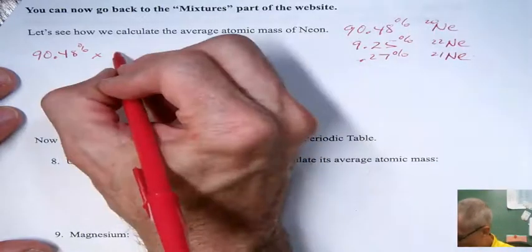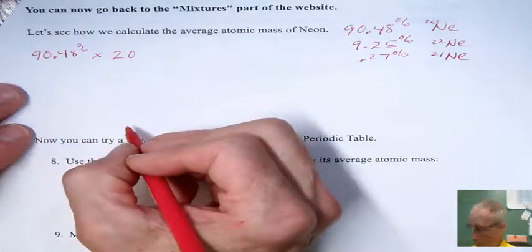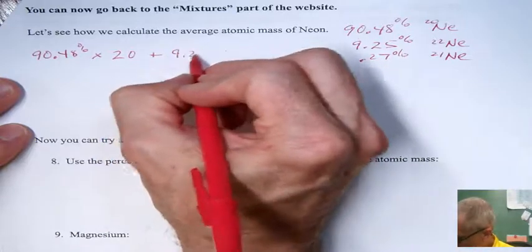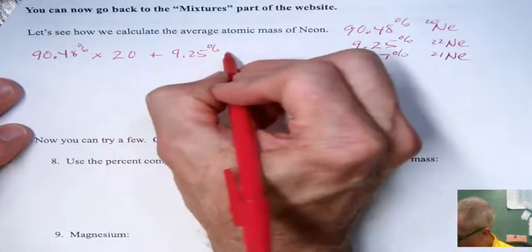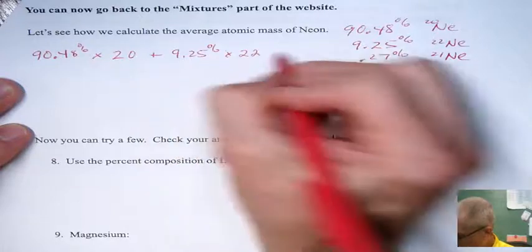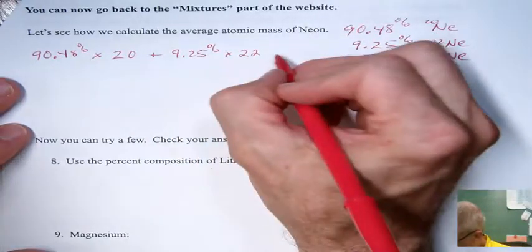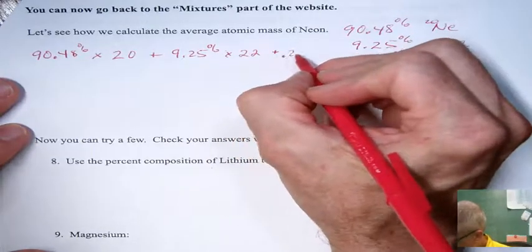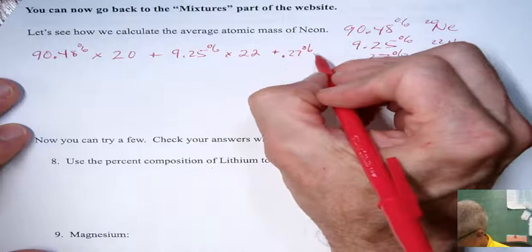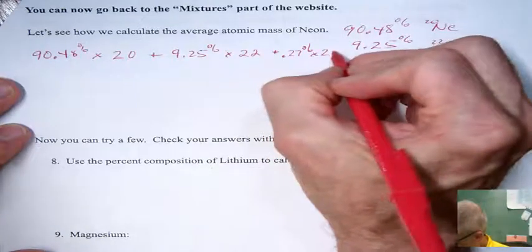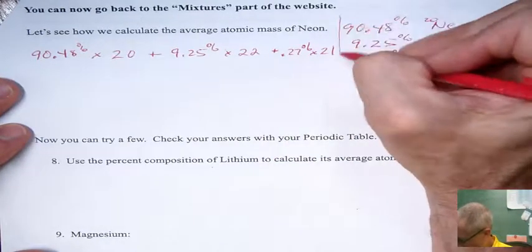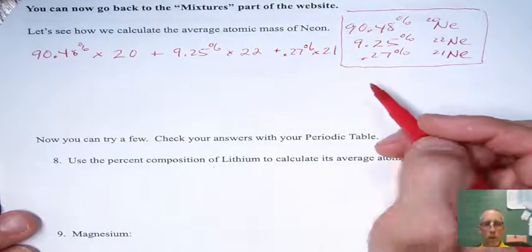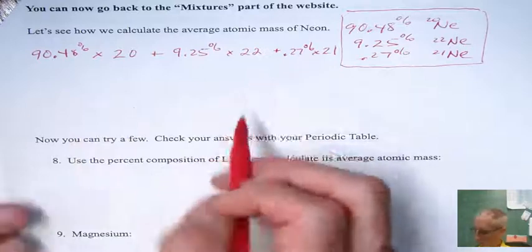And then we add to that 9.25 percent times the mass of 22, and then we add 0.27 percent times 21. Make sure we don't get these numbers mixed up. Let's draw a little box around that. And so this is what we're going to punch into our calculator. Or, if you'd like to change these percents into decimals, you don't have to do both of these.